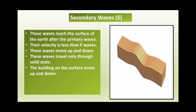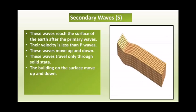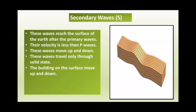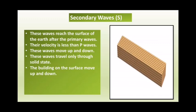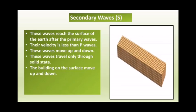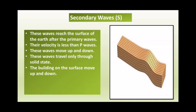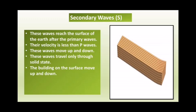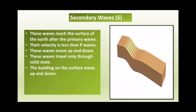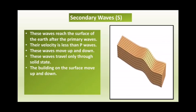The secondary waves reach the earth's surface after the primary waves and also scatter in all directions from the focus of the earthquake. Their velocity is lesser than that of the P waves. The particles in the way of these waves move up and down in the direction of the energy transfer. These waves can travel only through a solid medium and get absorbed as they enter the liquid medium. Buildings on the earth's surface move up and down because of these waves, and they are more destructive than the primary waves.